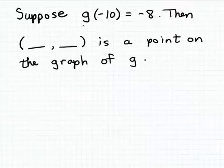So in function notation, g of minus 10 means the output that matches the input minus 10. Or in other words, this is the y value that matches the input, the x value minus 10.